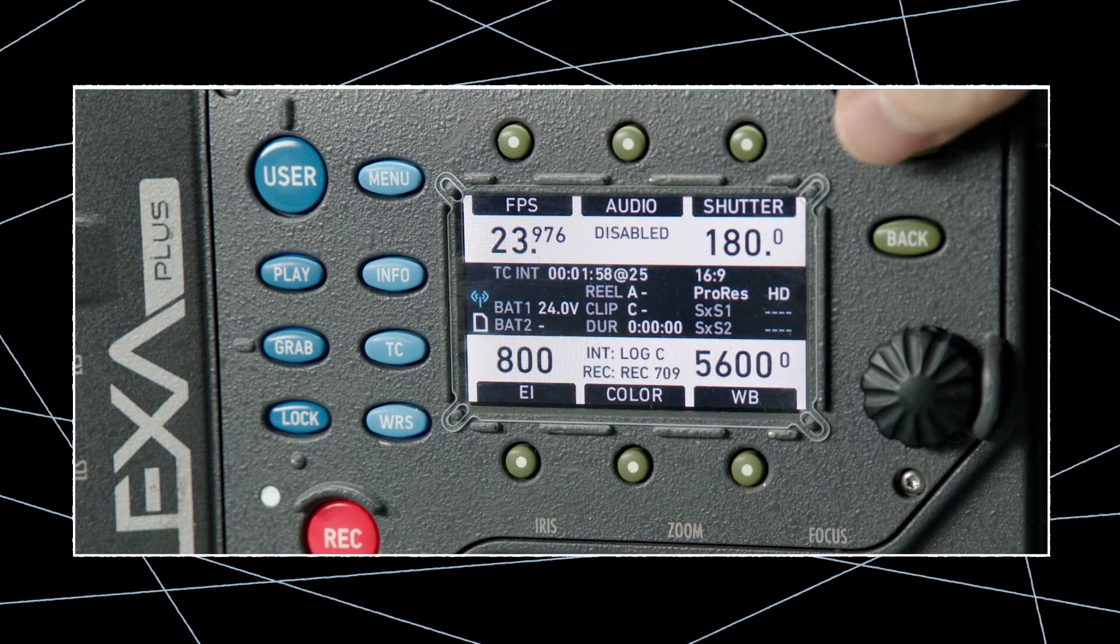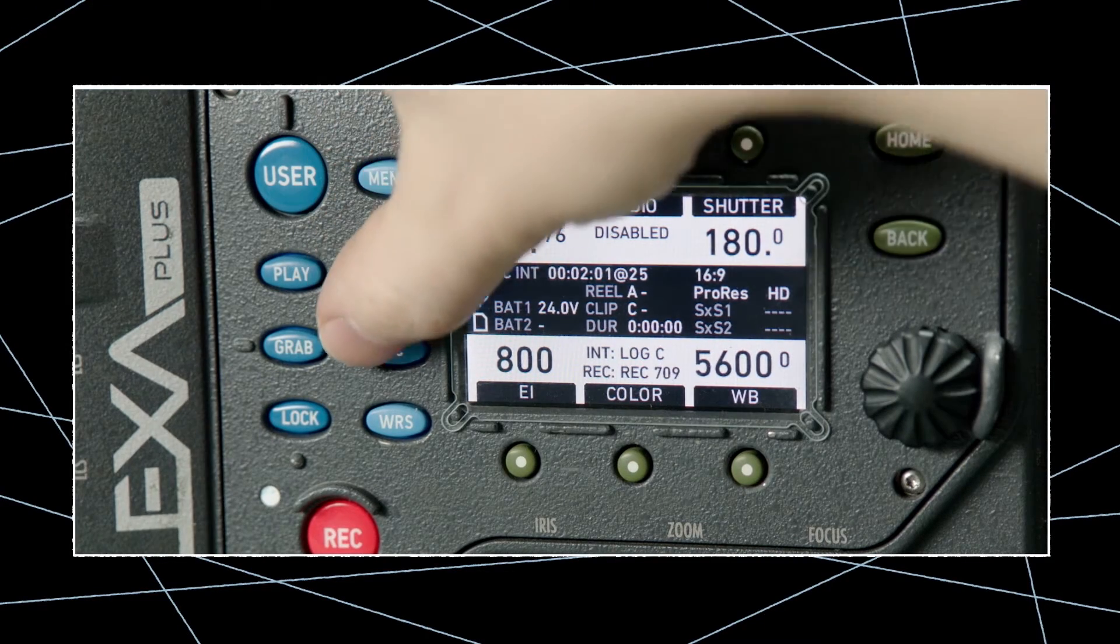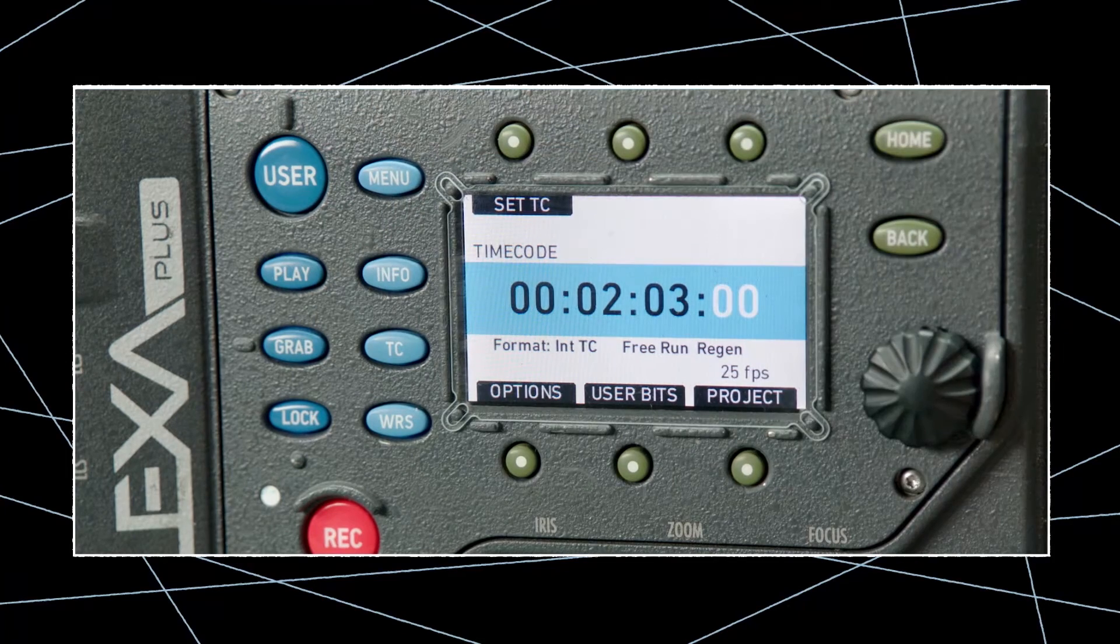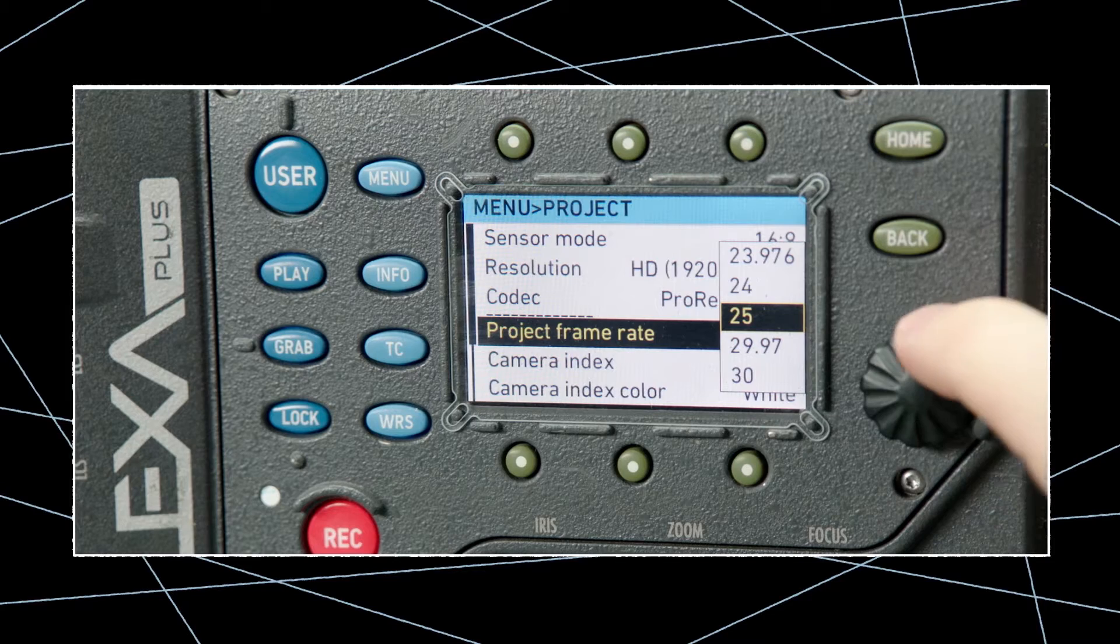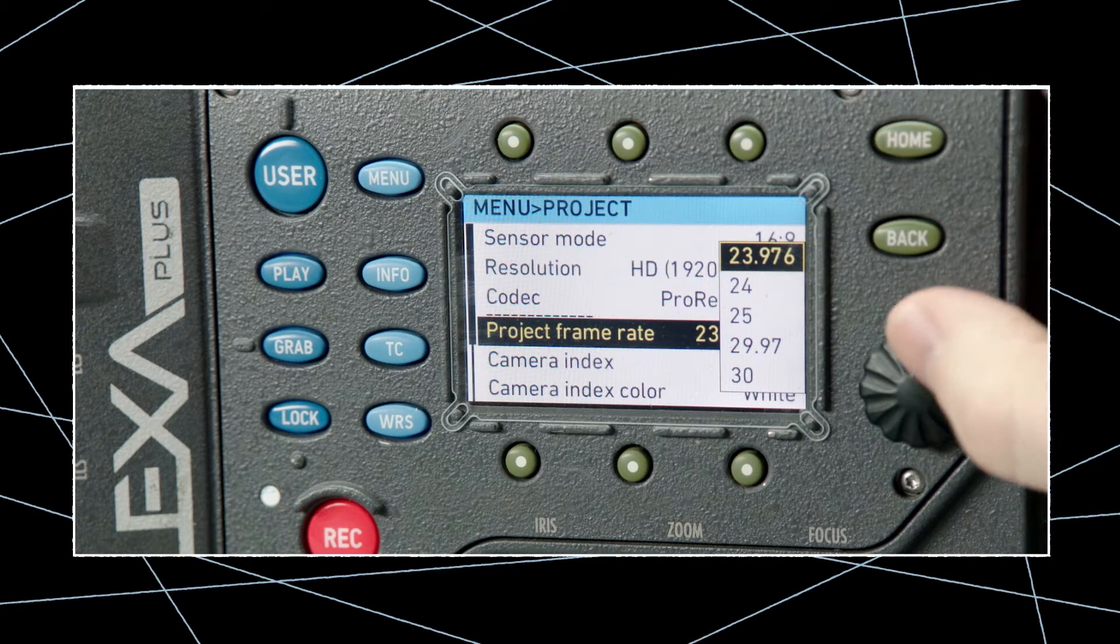Now enter the timecode menu by pressing the dedicated TC button. The next step is to adjust the project timebase. To do so, go to the project menu, then project frame rate, and adjust.